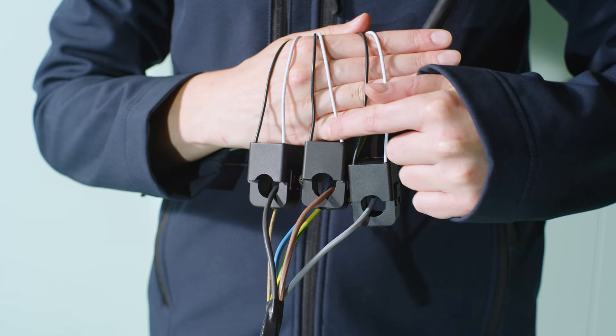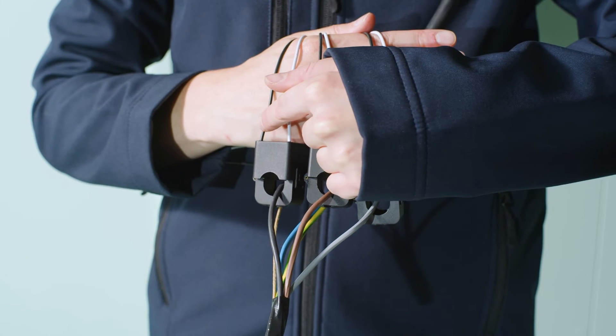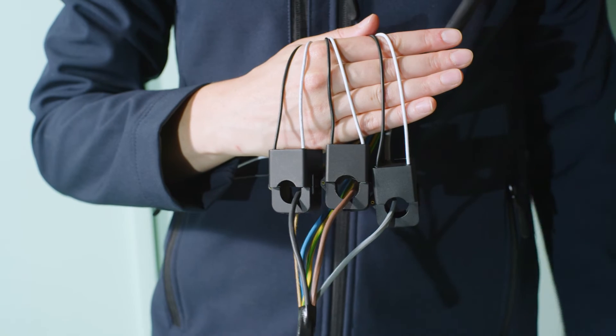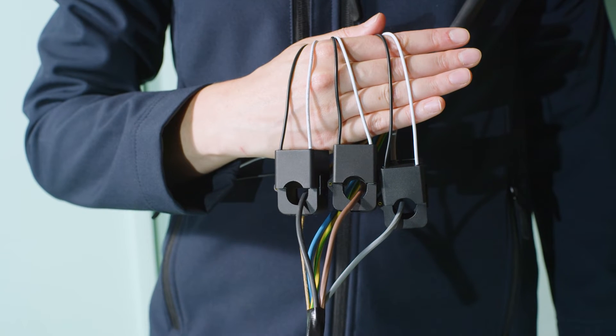Step two: Install the CT clamps on the phase cables that lead to the grid. Make sure all three clamps are located at the right phase.